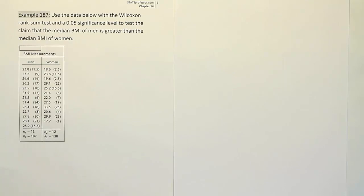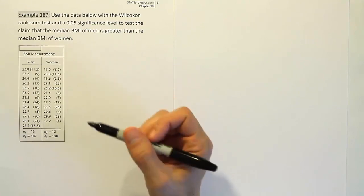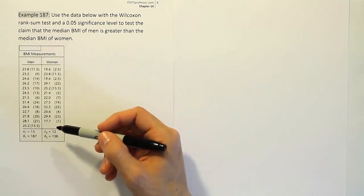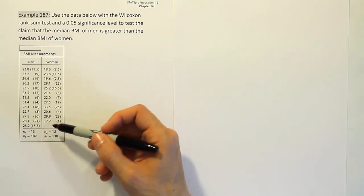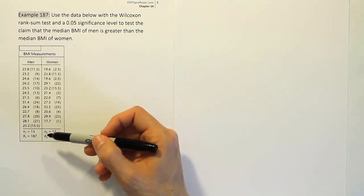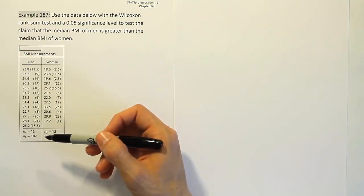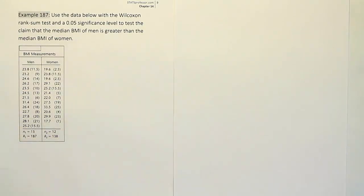One thing we want to notice here is the sample sizes are too large to use our standard table for the Wilcoxon rank sum test. Our table there has a maximum sample size of 10 for both samples. So 13 and 12 are both too big, so at this point we're going to have to rely on the idea of using the standard normal distribution as an approximation to the distribution for this test statistic. So what we're going to do here is we're essentially going to use a Z test statistic, a large sample method to solve the problem.